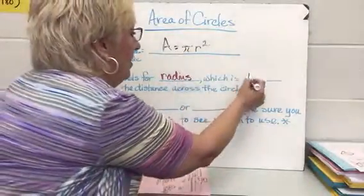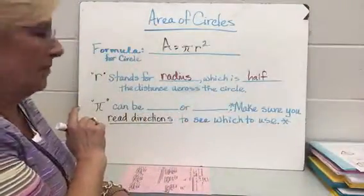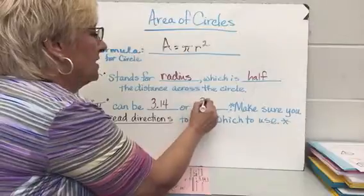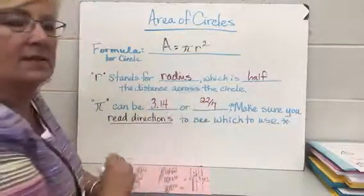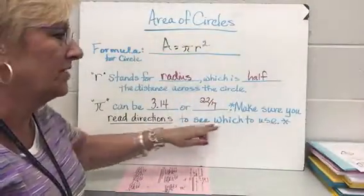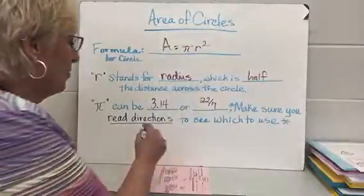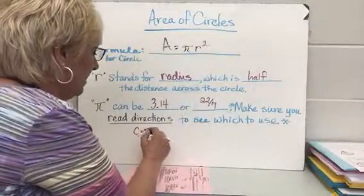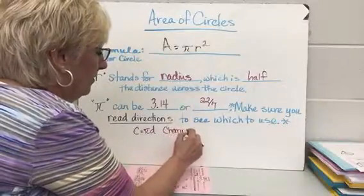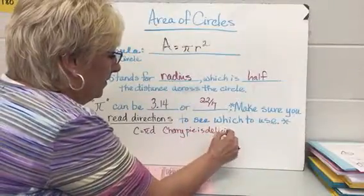The r stands for the radius of a circle, which is going to be half the distance across the circle. Pi can be either 3.14 or 22/7 — either one gives you the pi value. The only thing you have to make sure is that you read the directions to know which one to use. Remember, circumference is pi times D — 'cherry pies is delicious.'